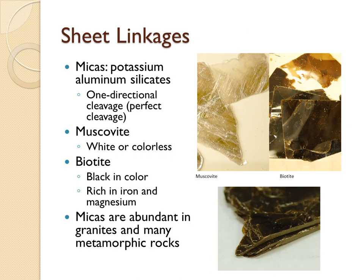Minerals that form from sheets of tetrahedrons are known as micas. These are minerals rich in potassium and aluminum along with the silicate tetrahedrons. Because the tetrahedrons occur in a sheet-like arrangement, most of these minerals have one direction of cleavage, known as perfect cleavage — they peel like the pages of a book. There are two types of common micas: muscovite, which is white or colorless, and biotite, which is richer in iron and magnesium and is darker in color, often black to very dark brown. Micas are very common in granite and are found in many types of metamorphic rocks.